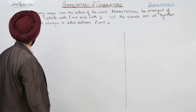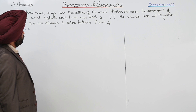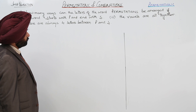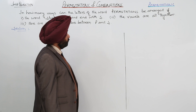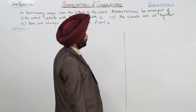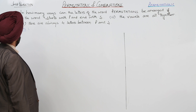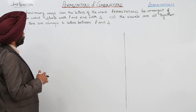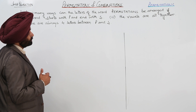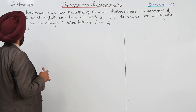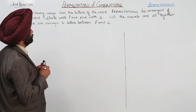In this question, the word given is PERMUTATIONS itself — P-E-R-M-U-T-A-T-I-O-N-S. We have to arrange it under three given conditions: Number 1, the word should start with P and end with S. Number 2, the vowels are all together. And Number 3, there are always 4 letters between P and S. A very interesting question.